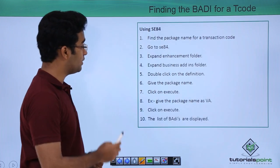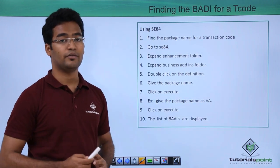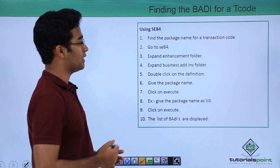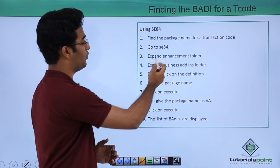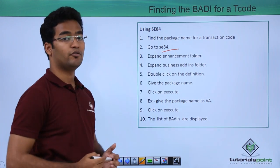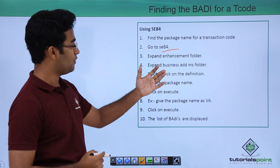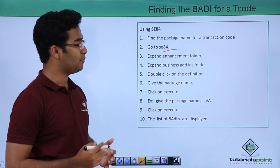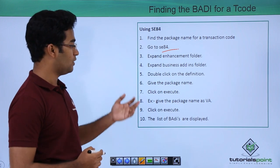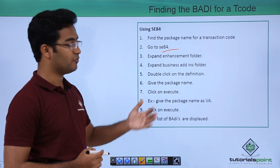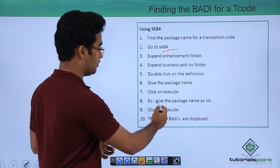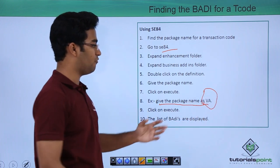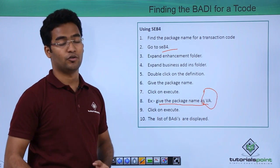Now let us see the next way, using the SE84 transaction code. First we have to find the package name for the transaction code, then go to SE84. Here we have to expand the enhancement folder and then expand the business add-in folder. Double click on the definition and give our package name — for example, suppose the package name is VA — and then click on execute.